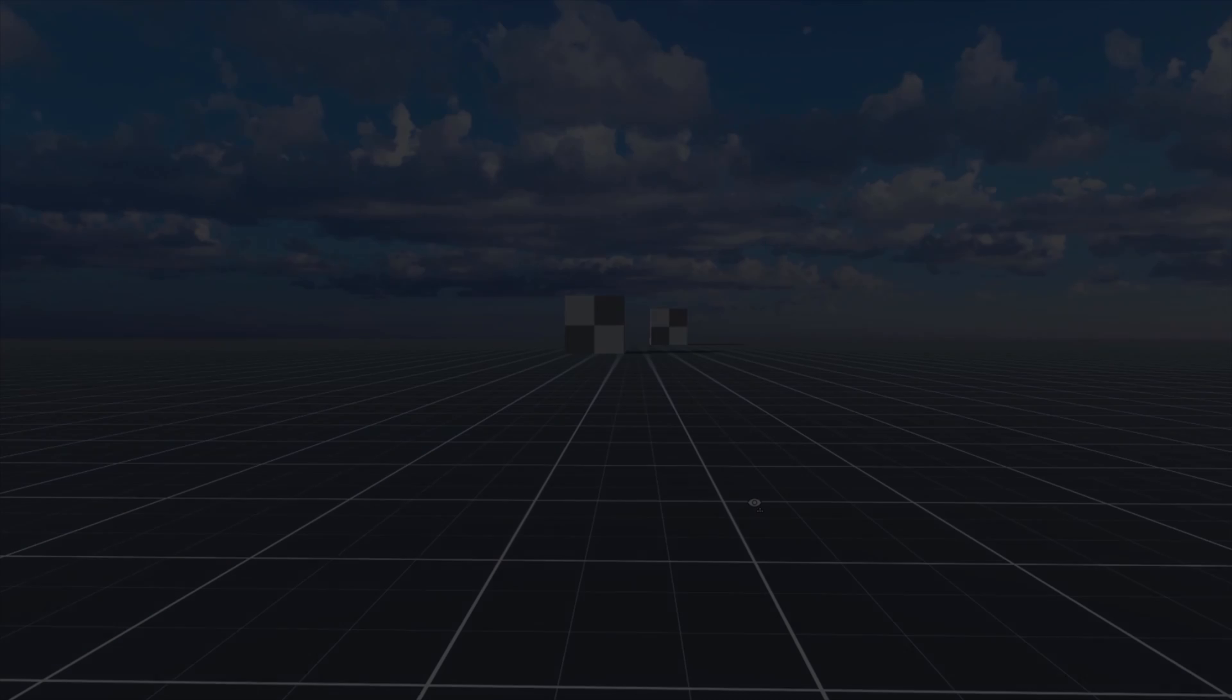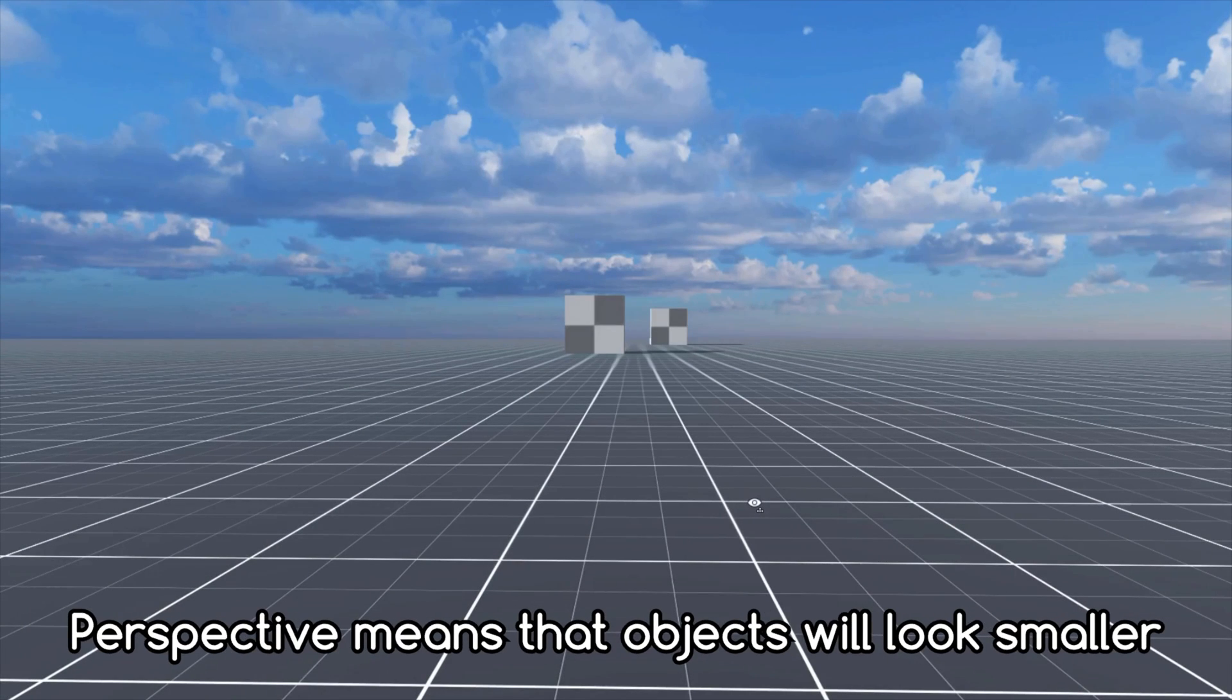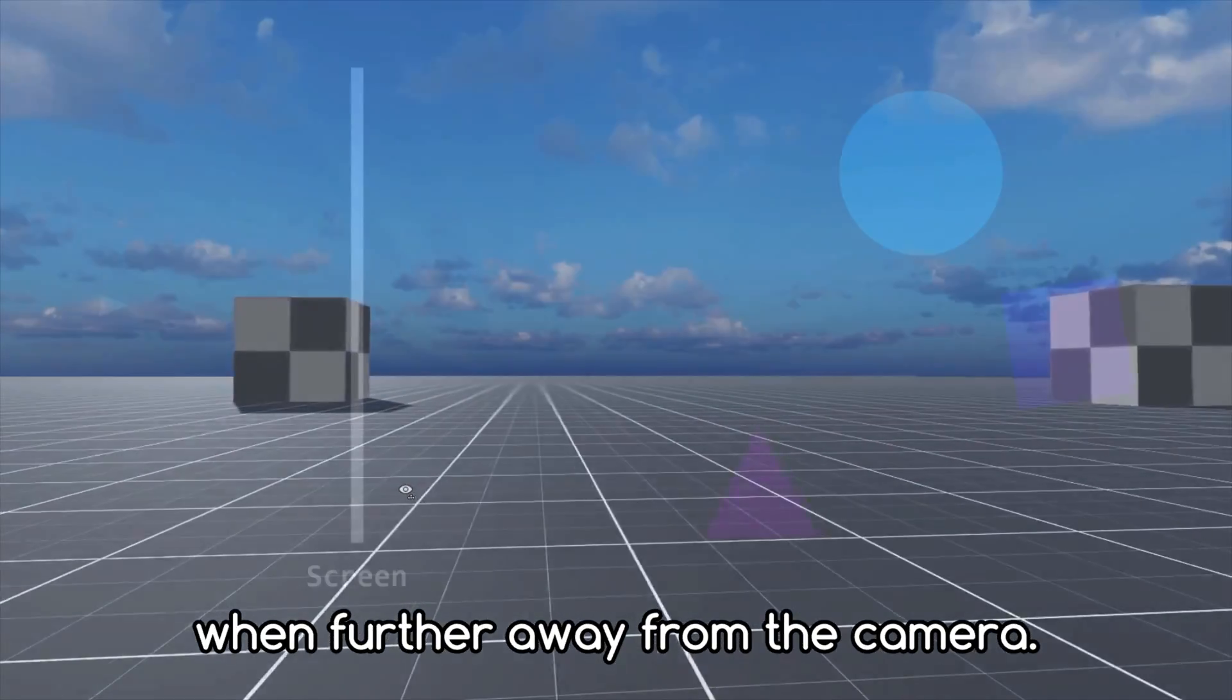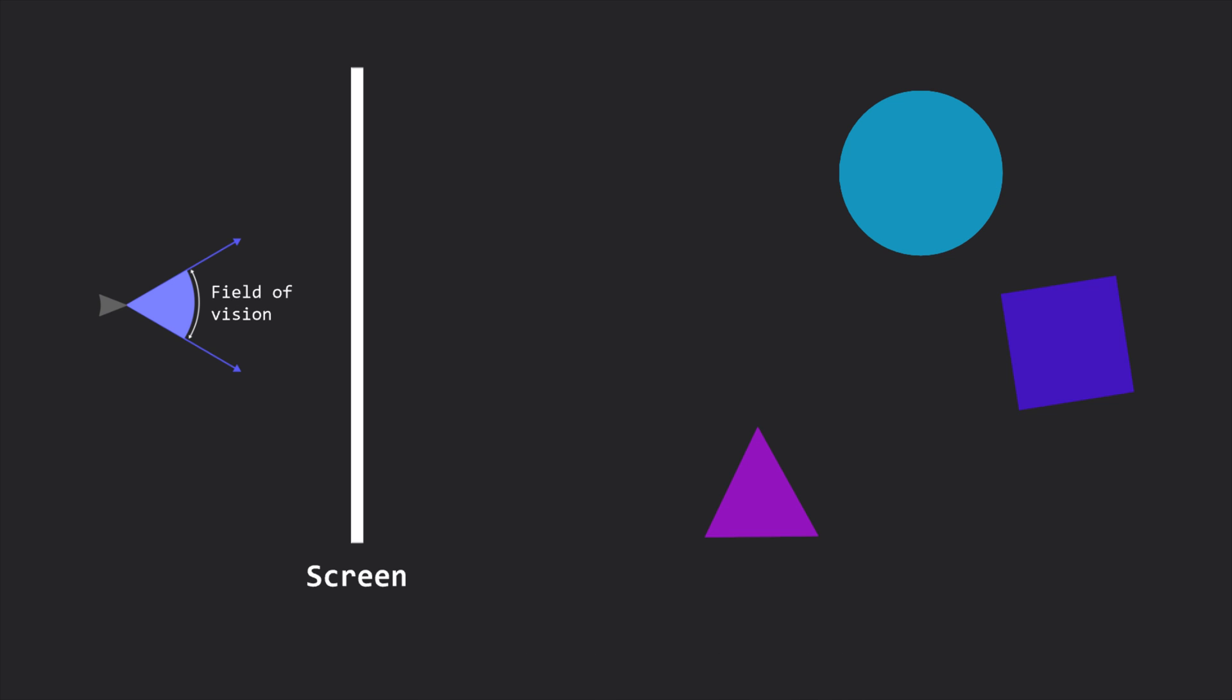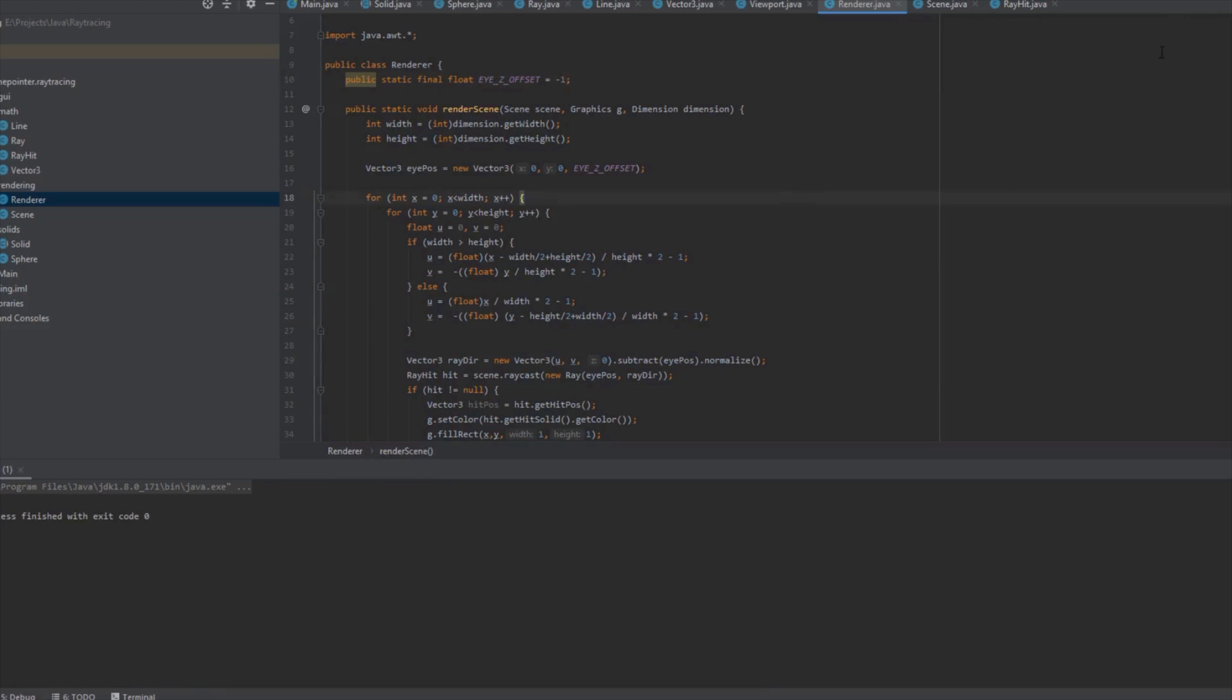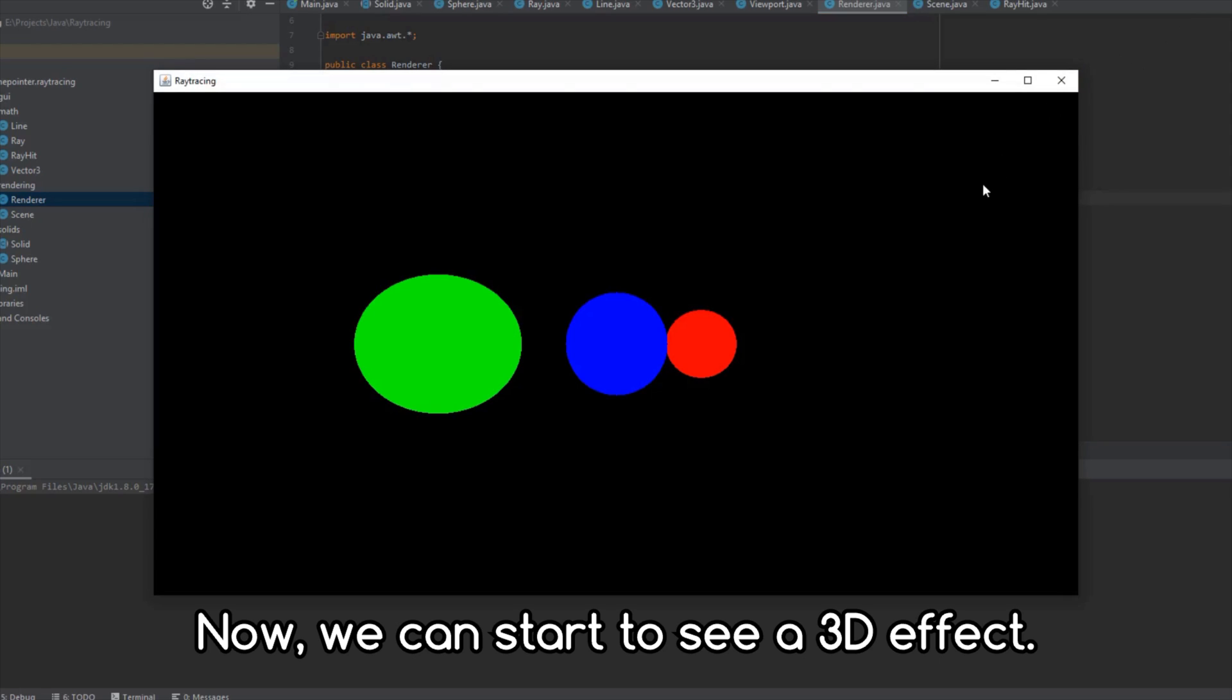So I added perspective. Perspective means that objects will look smaller when further away from the camera. This is achieved by tracing rays in an angle around the camera. Now, we can start to see a 3D effect.